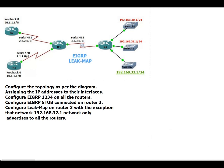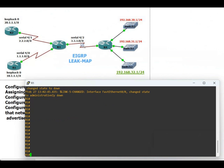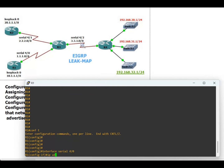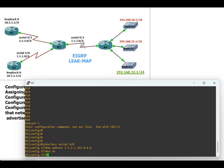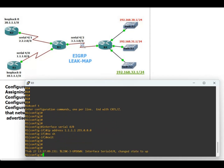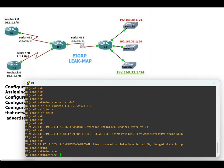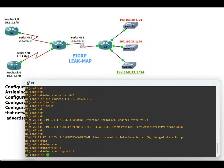Starting with Router 1. Router 1 has one loopback and one serial interface. Interface serial 4/0, IP address 1.1.1.1 255.0.0.0, no shutdown. Interface loopback 1, and the IP address is 10.1.1.1.